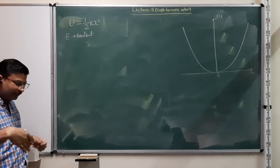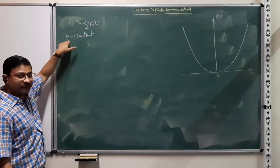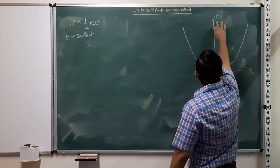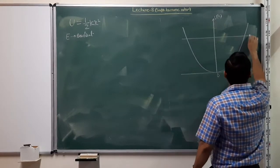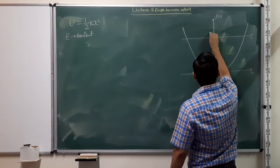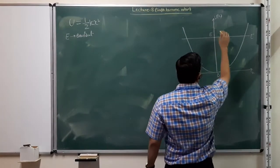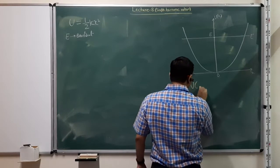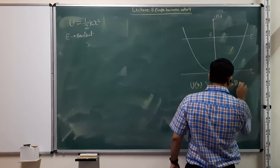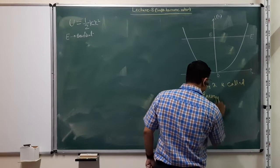For a system oscillating under a central force, we know that the total energy is constant, which is given by the initial conditions or the maximum amplitude of the system. A plot of U(x) or U(r) versus x is called an energy diagram.